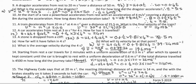Question 11: a train decelerates from 20 meters per second at 4 meters per second squared over a distance of 25.5 meters — what is the final velocity? Using v² = u² + 2as: v² equals 20² plus 2 times minus 4 times 25.5. The minus 4 is used because it's decelerating. Therefore v equals 14 meters per second.